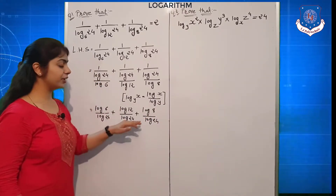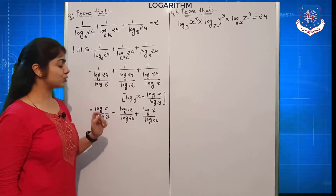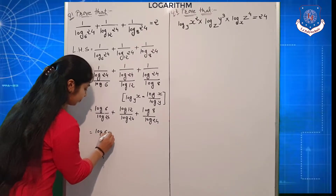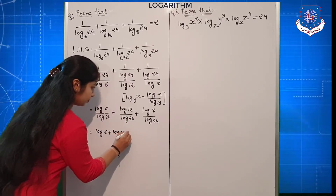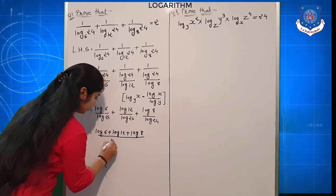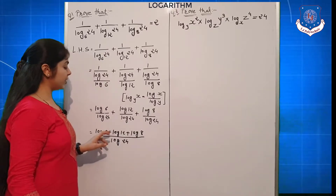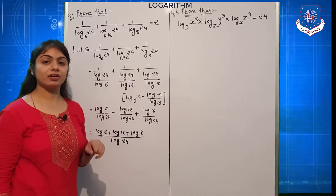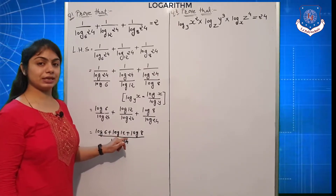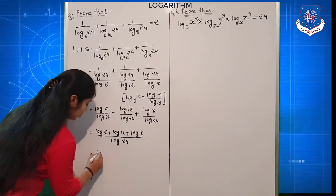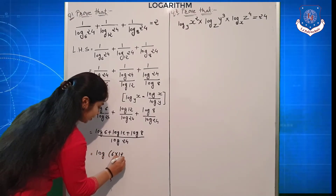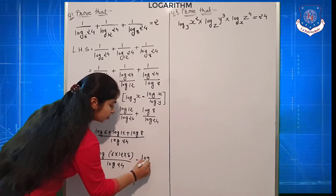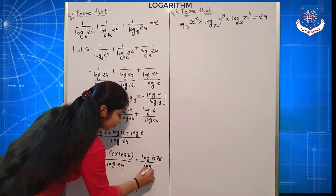Since all three fractions have the same denominator, we combine them: that is equal to (log 6 plus log 12 plus log 8) divided by log 24. Now, using the first fundamental law — addition converts to multiplication — the numerator becomes log (6 × 12 × 8) divided by log 24. That gives us log 576 divided by log 24.